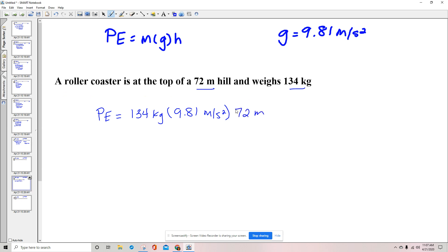So we'll say 134 times 9.81 times 72. It's going to give us 94,646.88.